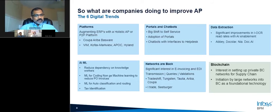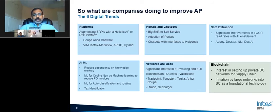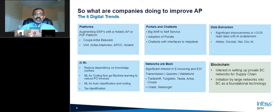The sixth and final trend: early days on blockchain, but we're seeing significant interest. In our view this is an inevitable shift — blockchain's core capabilities around immutability, multi-party access, and security lend themselves extremely well to AP. If there's one domain that can be easily blockchained, it's AP. We're seeing Ariba investing in blockchain capability, OB10, and quite a lot of startups as well. To summarize, those are the six digital trends we're seeing from a digitization standpoint in AP.